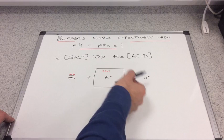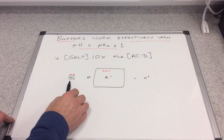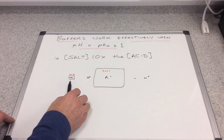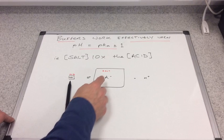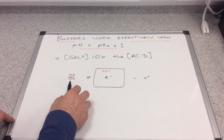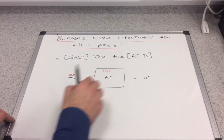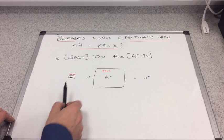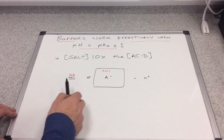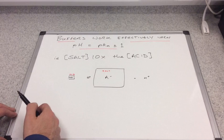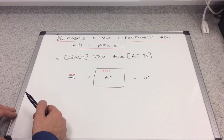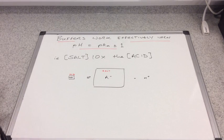If we add base to this buffer then obviously the H+ ions are removed and so it needs to dissociate to put them back. Now you can see we've got a tiny concentration of HA relative to A-, and it won't take very long before that's going to struggle to dissociate anymore.